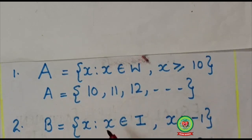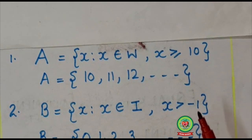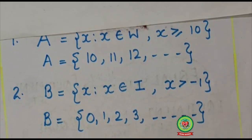Here B is {x: x ∈ I, x > -1}. I stands for integers. As we know, integers means all the positive and negative numbers including 0. Here one restriction is given that is x should be greater than -1. That means we will write in roster form from 0 and all the positive integers. Here I will write {0, 1, 2, 3, so on}. Again, it shows that here counting will go endless. Therefore, it is also an infinite set.